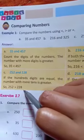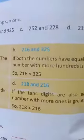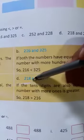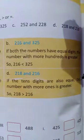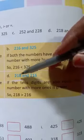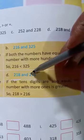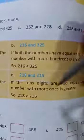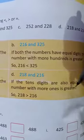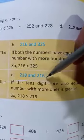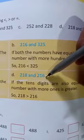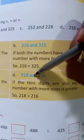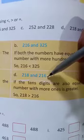Now question D: 218 and 216. If the hundreds digits are also equal and the tens digits are also equal, then the number with more ones is greater. Here you see the ones place digits are 8 and 6. Since 8 is bigger, 218 is greater than 216.